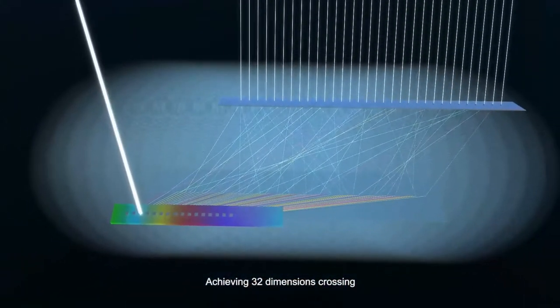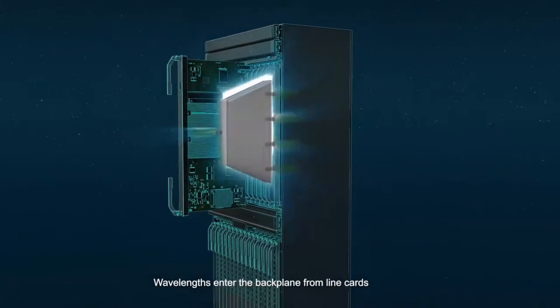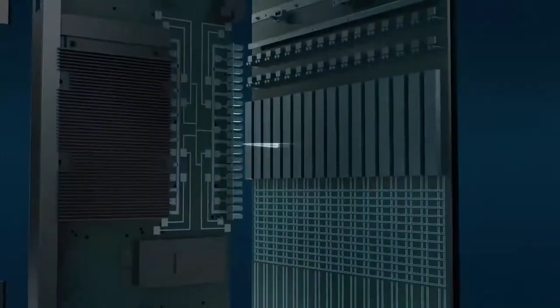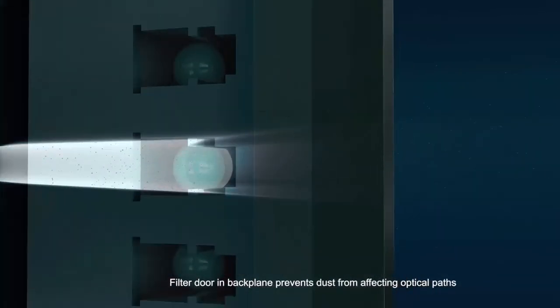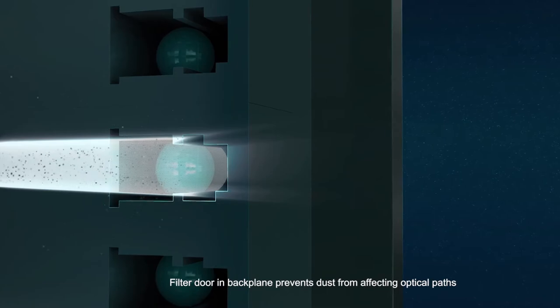Achieving 32 dimensions crossing, wavelengths enter the backplane from line cards. Filter door in backplane prevents dust from affecting optical paths.